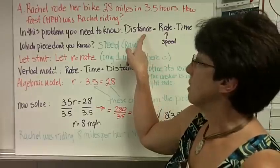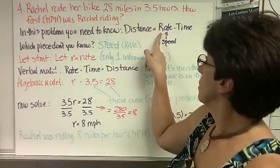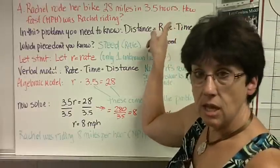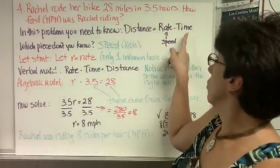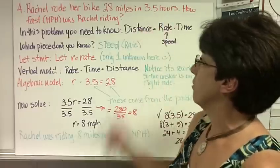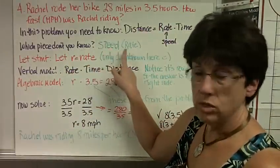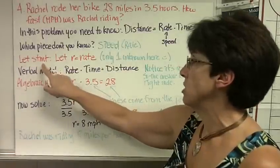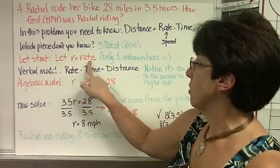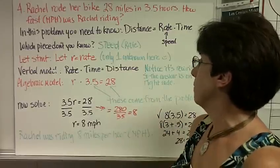So which piece don't you know? Do you know the distance? Yes. It's 28 miles. Do you know the rate? No, because it says how fast was Rachel riding? Do you know the time? Well, you better or you won't be able to figure this out. And you do. It's 3.5 hours. So what piece don't you know? The speed, which is the rate. So the let statement, we just say let R equal the rate. We only have one unknown in this because there's only three parts to it.